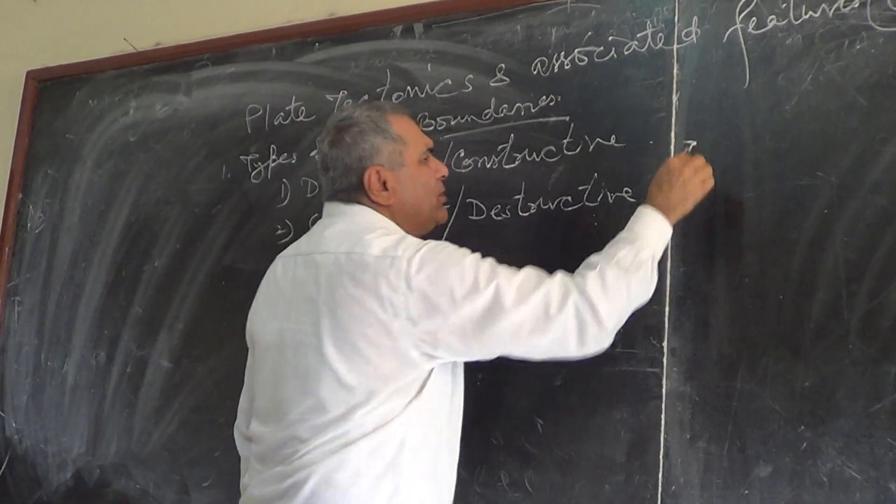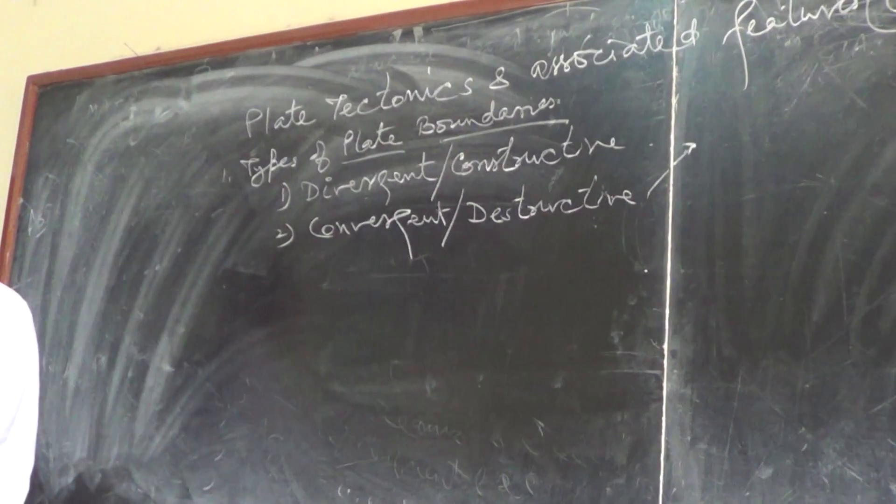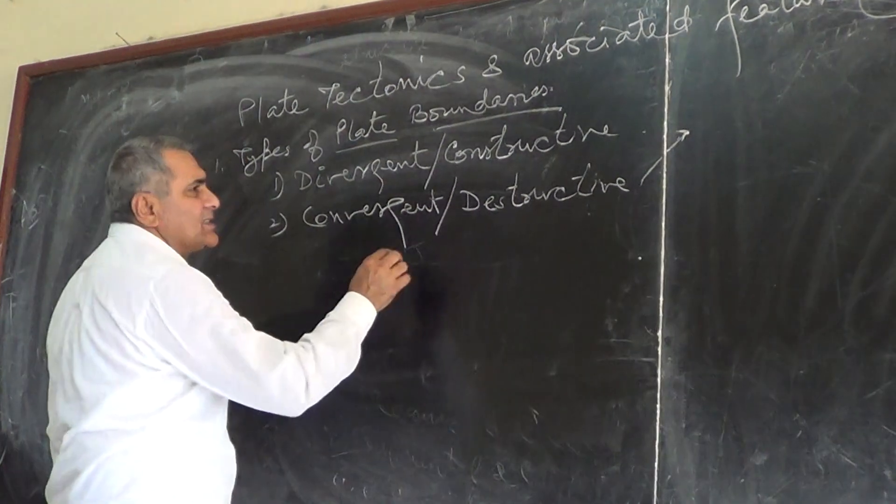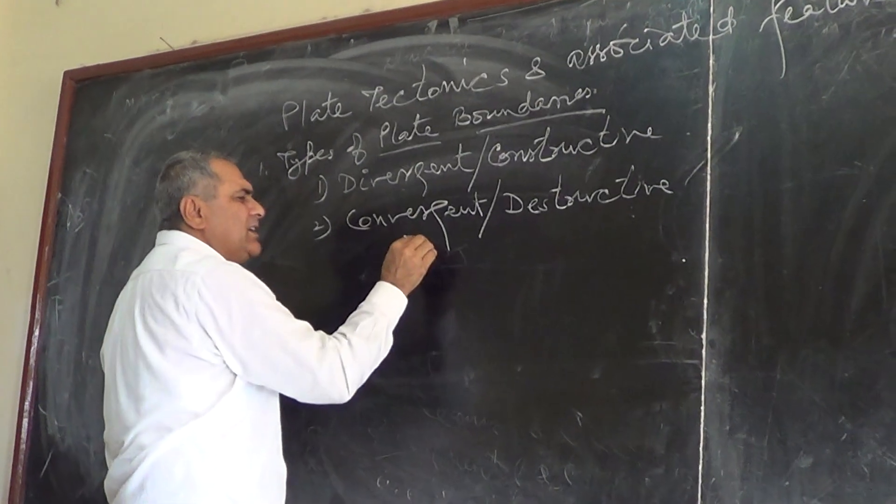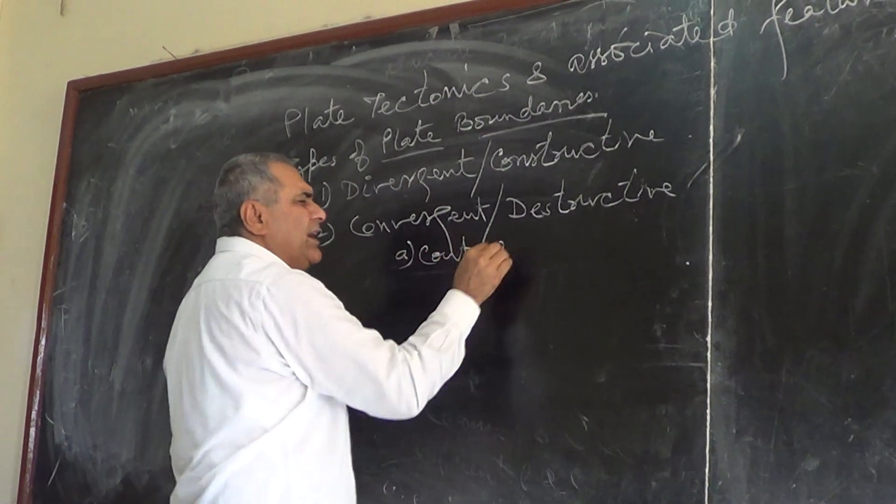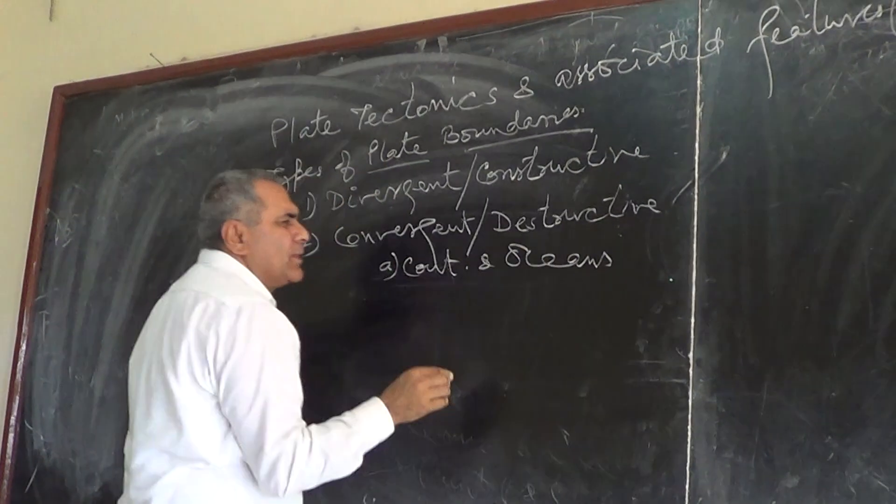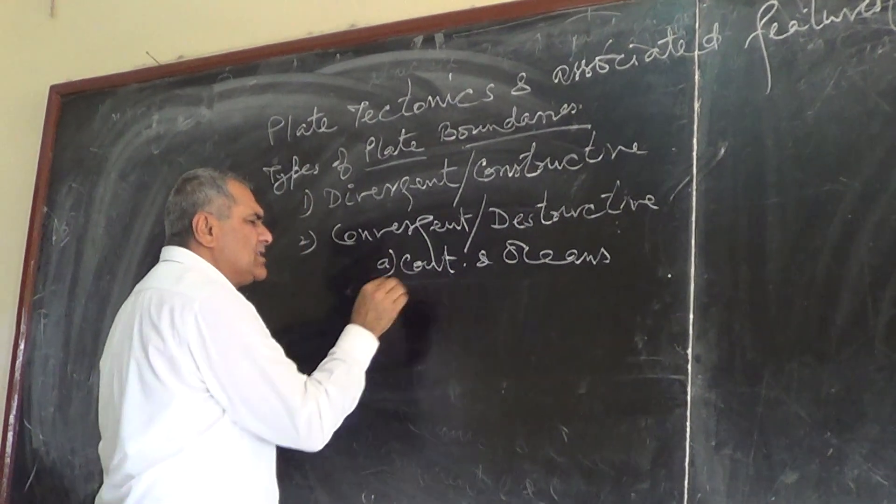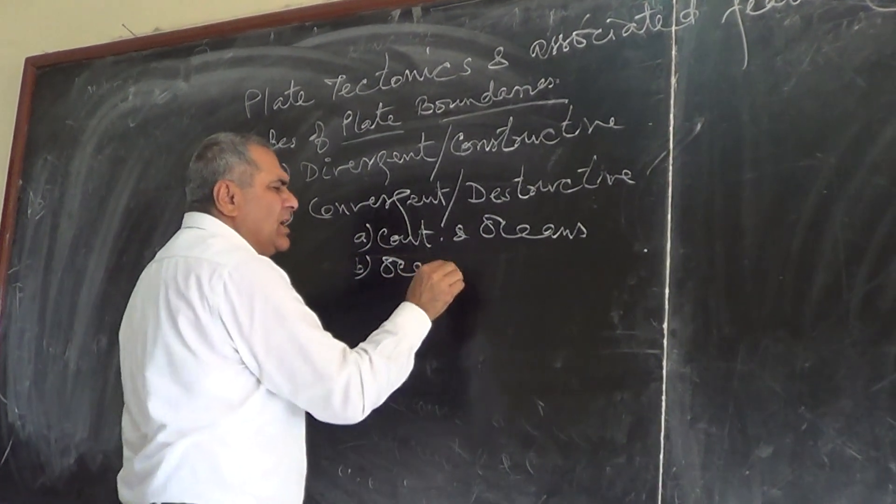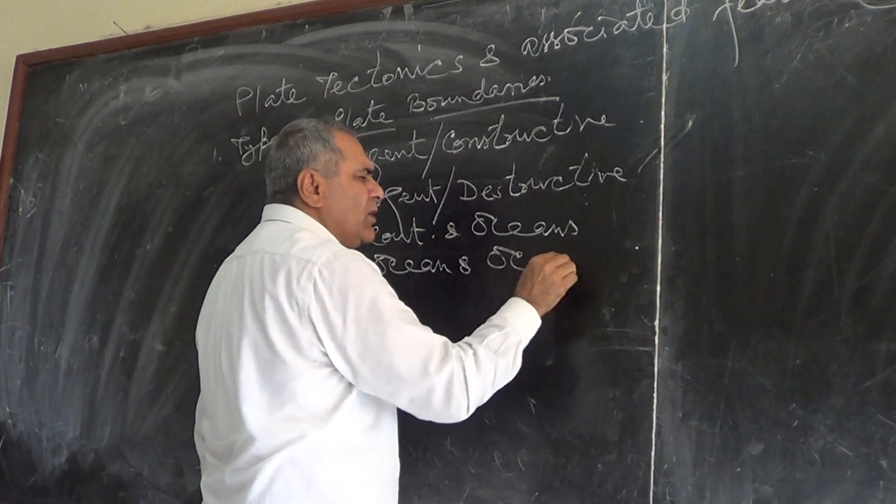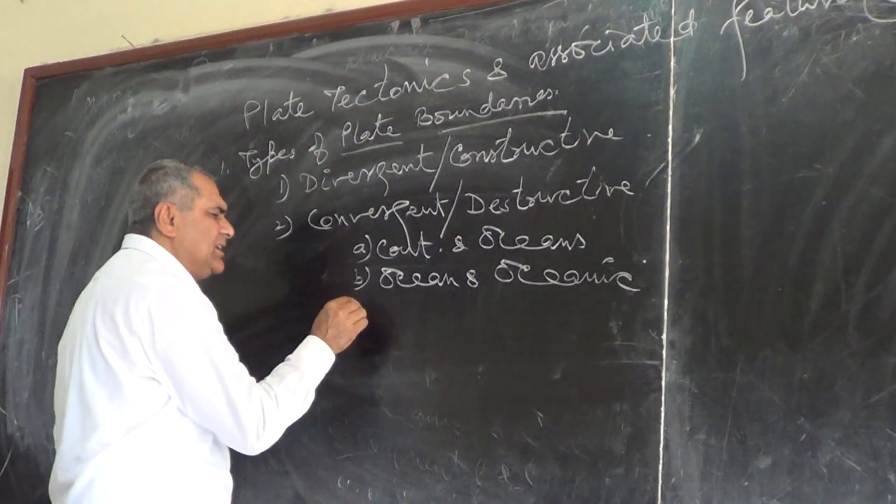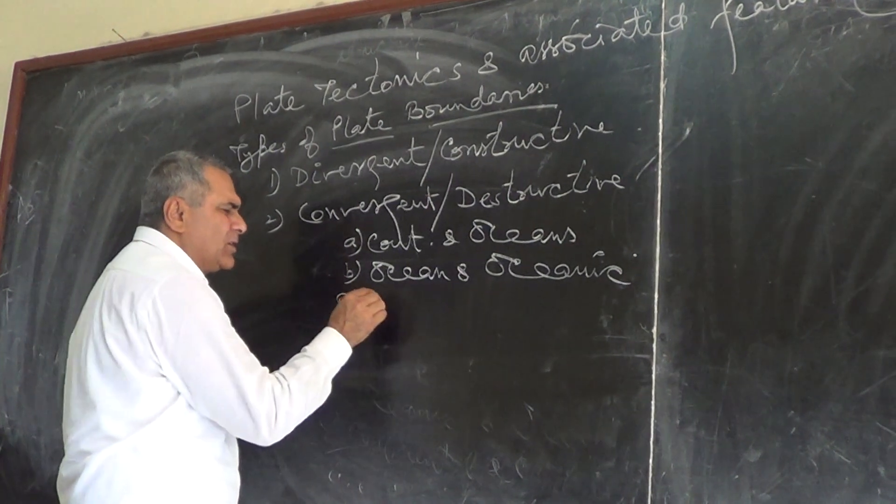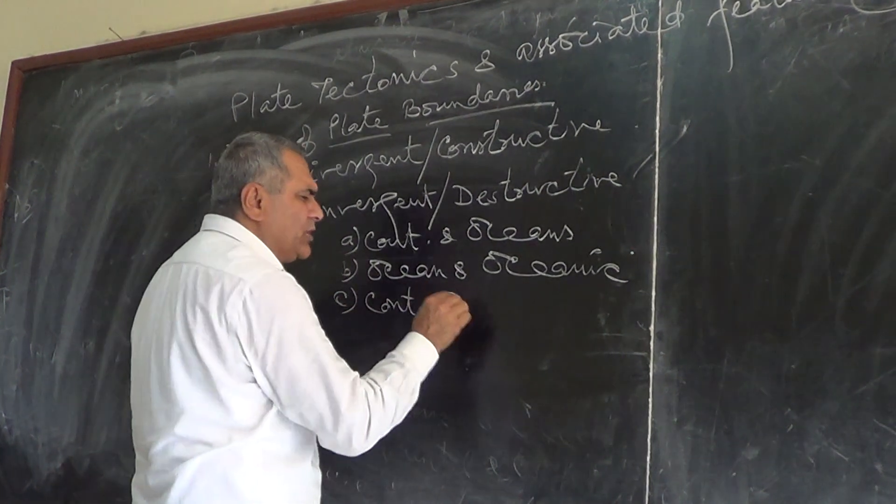They are formed in three different conditions. What are those conditions? Continental and oceanic plates. And ocean and ocean or oceanic plate. And third is continental and continental plates.